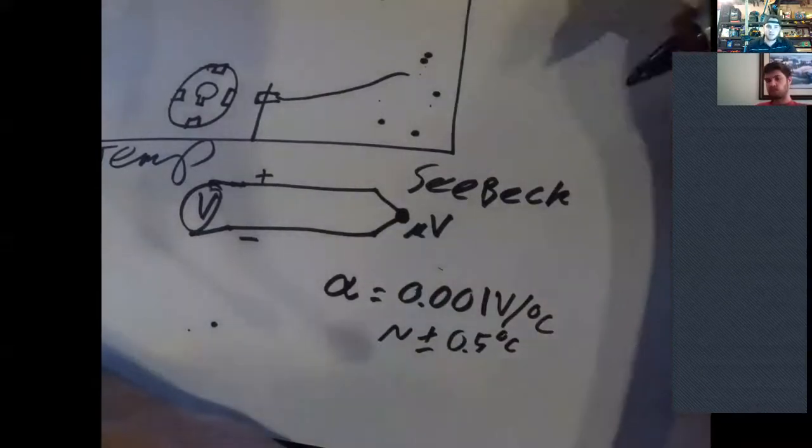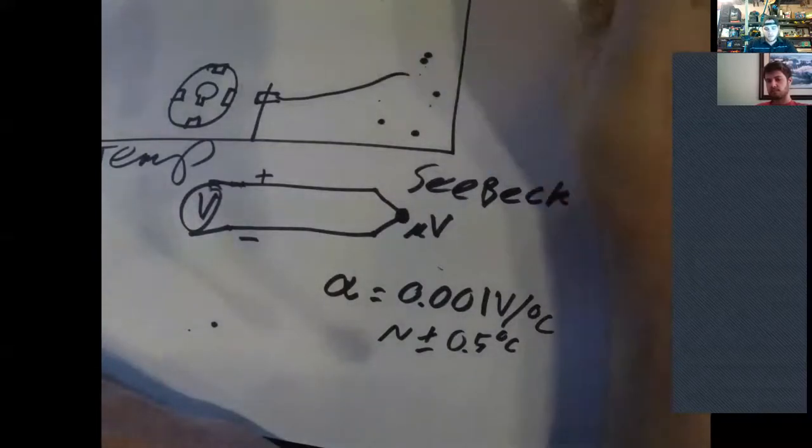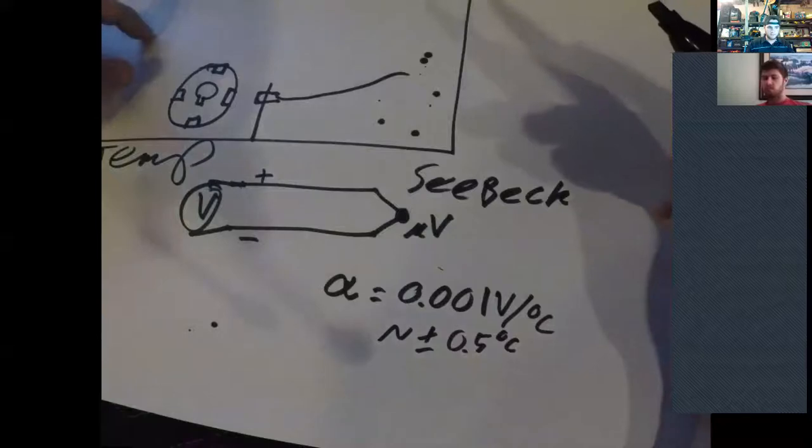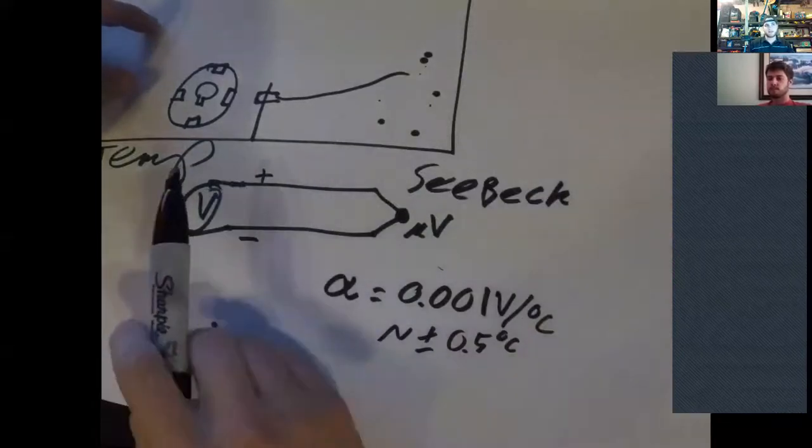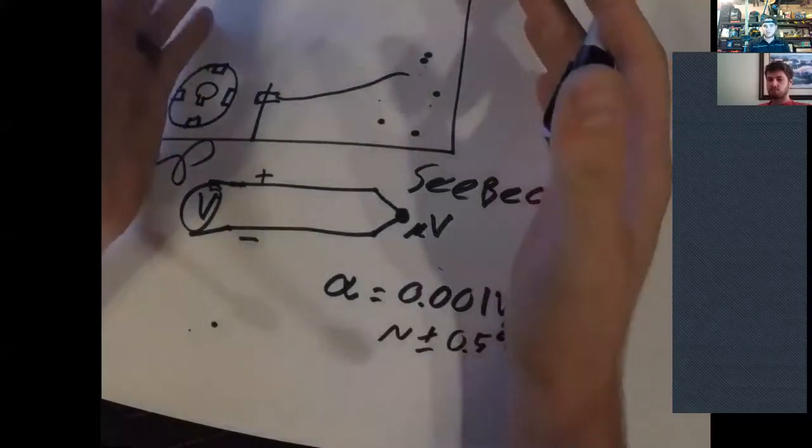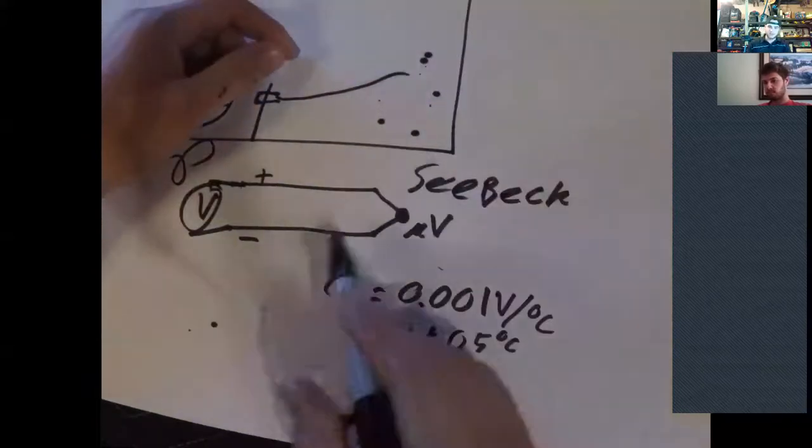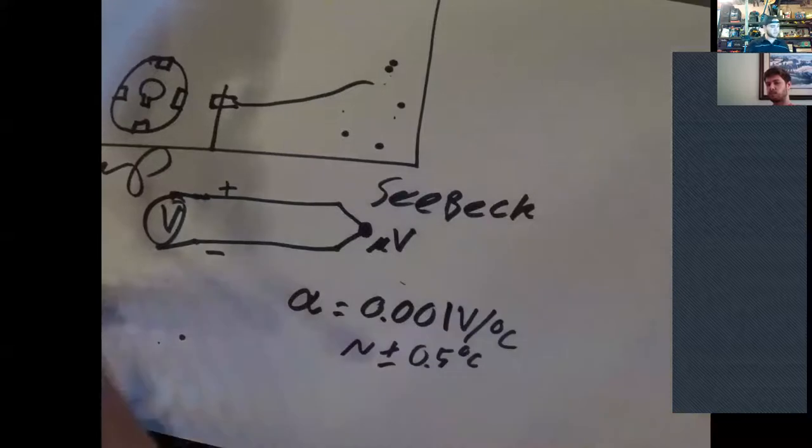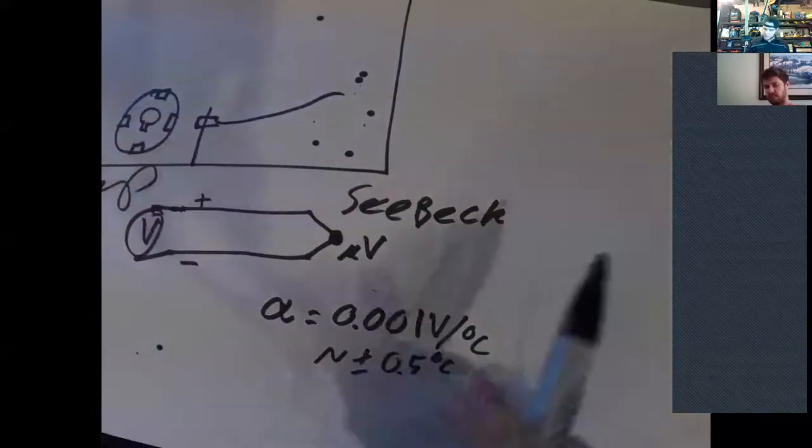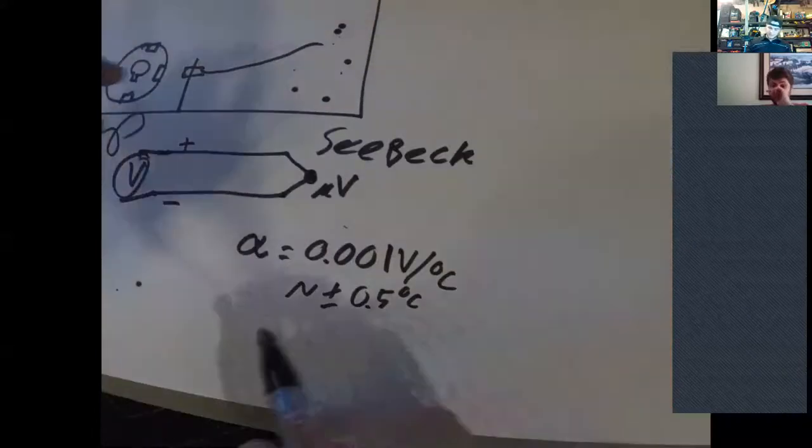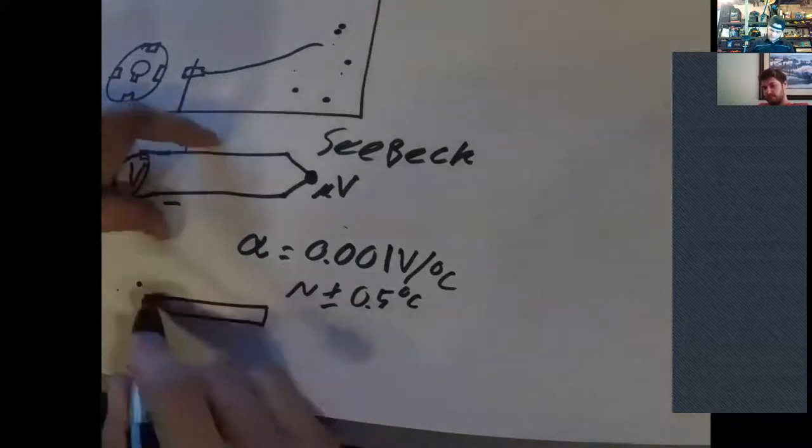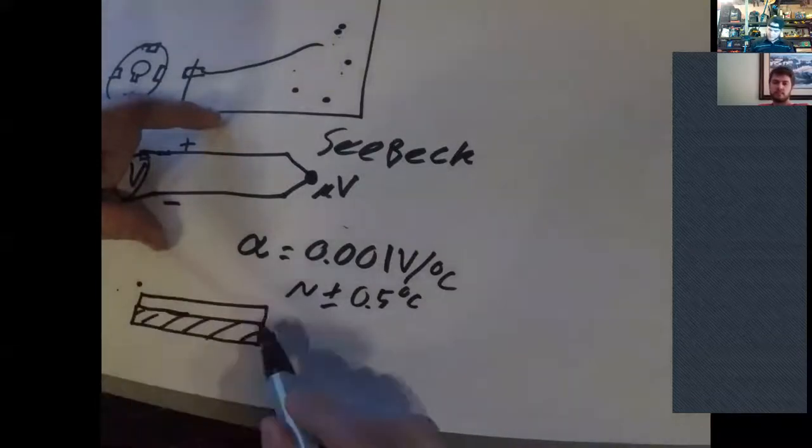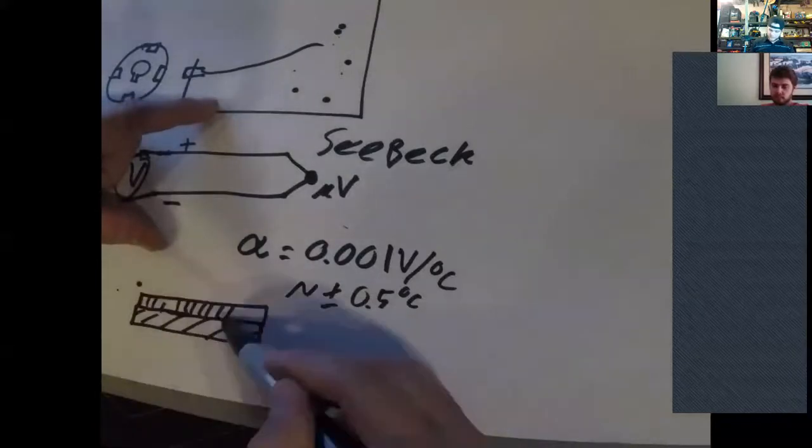And you'll calibrate that over some range. And so this just lets you get a pretty good temperature reading. And actually these have been around for a really long time. They're super well documented. There's different types. The most common are J and K types. I think if I remember right, type J is alumel and nickel wires.